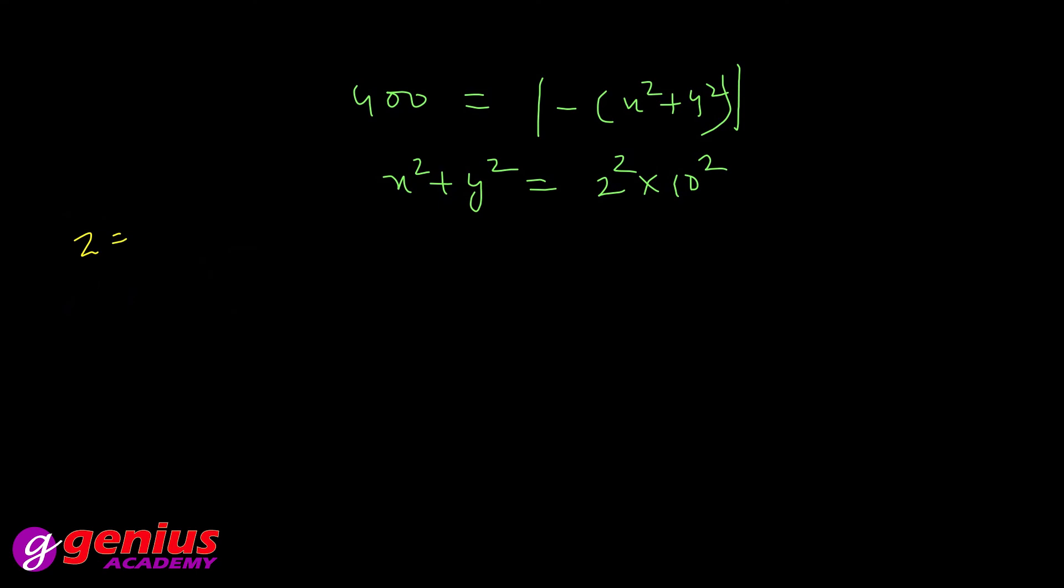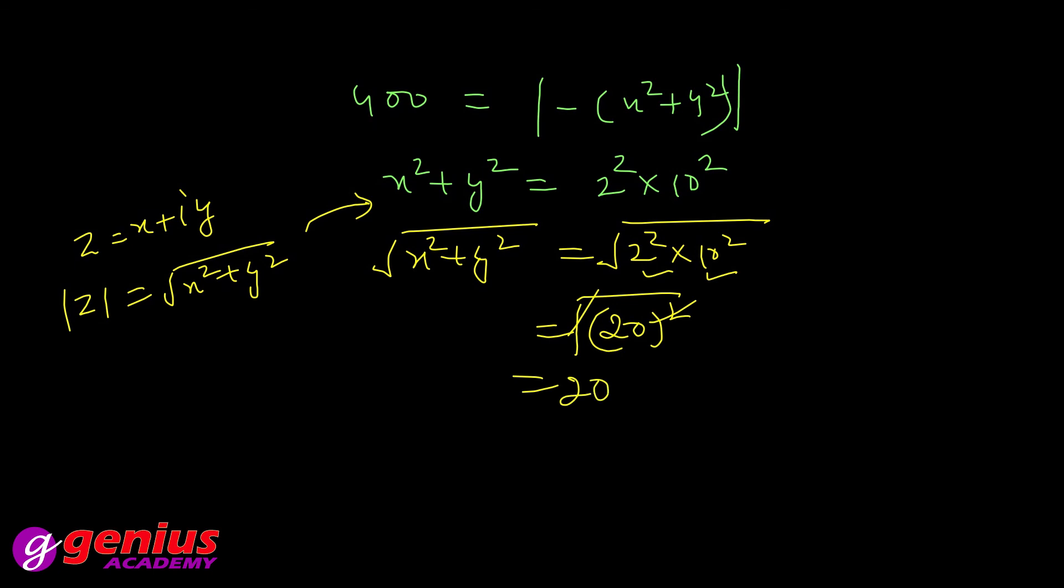We know that z = x + iota y. So mod of z kitna ho jayega? √(x² + y²). So if I take square root both sides, ye aise ho jayega: √(2² × 10²). Power same hai, so base multiply ho jayega. Direct bhi kar sakte: √400 = 20. And x² + y² under root, and ye mod of z equal to 20. But aapko kya diya hai? Three z ka mod, so put 3 out: 3 times 20 = 60.